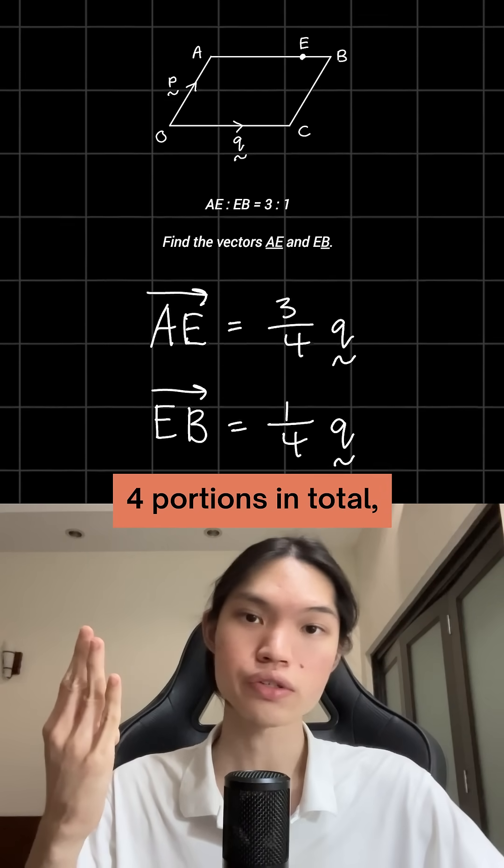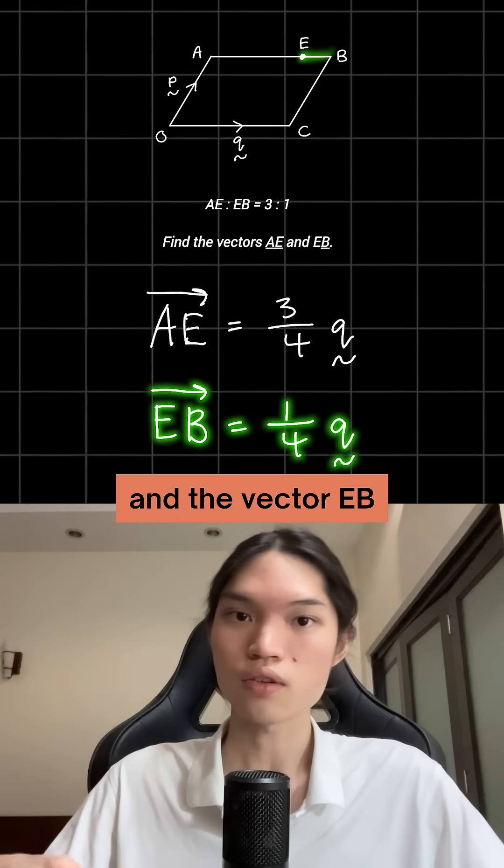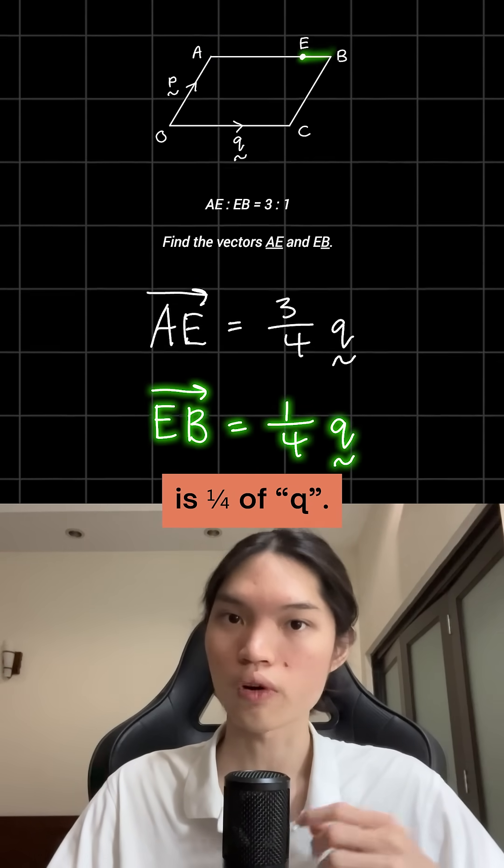Since there are 4 portions in total, the vector AE is equal to 3 quarters of Q, and the vector EB is 1 quarter of Q.